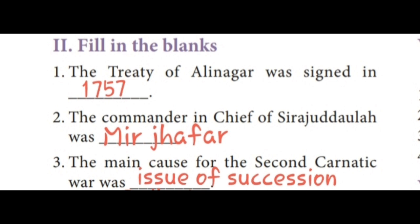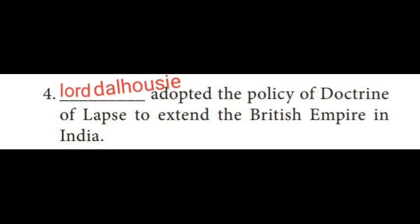Second section: fill in the blanks. First one: the Treaty of Alinagar was signed in the year 1757. Second one: the commander-in-chief of Sirajuddalla was Mir Jafar. Third one: the main cause for the Second Carnatic War was the issue of succession. Fourth one: Lord Dalhousie adopted the policy of Doctrine of Lapse to extend the British Empire in India.